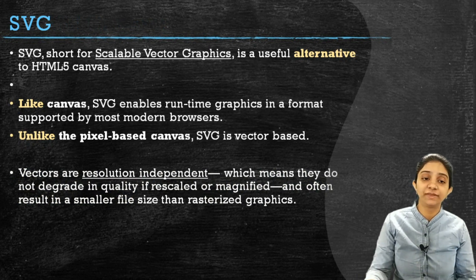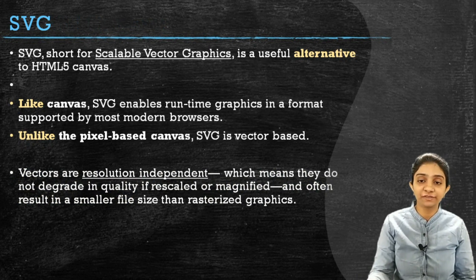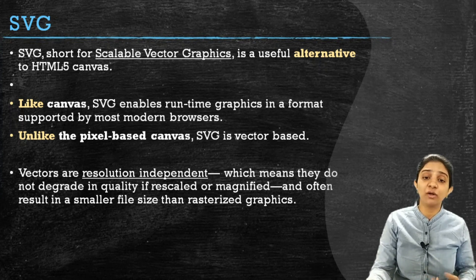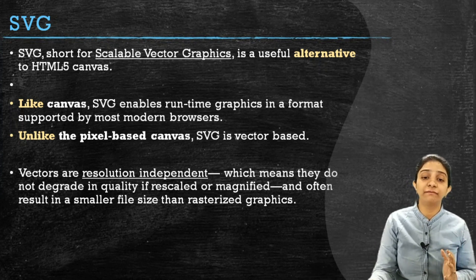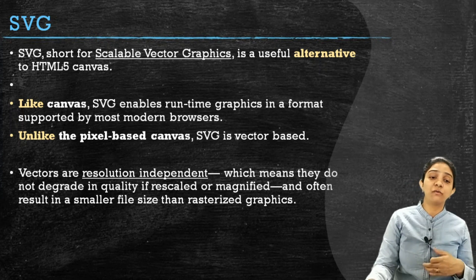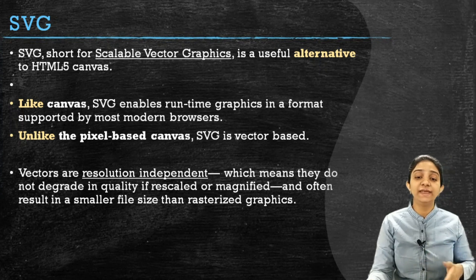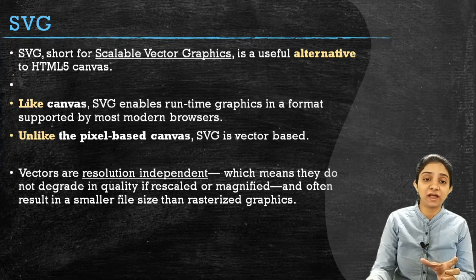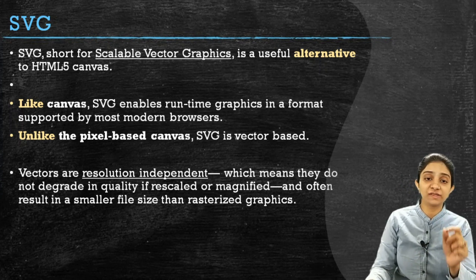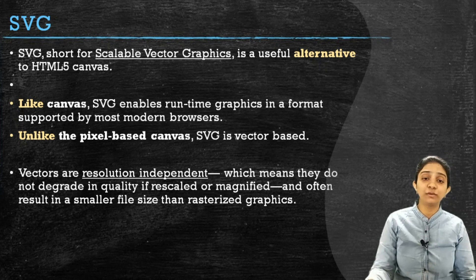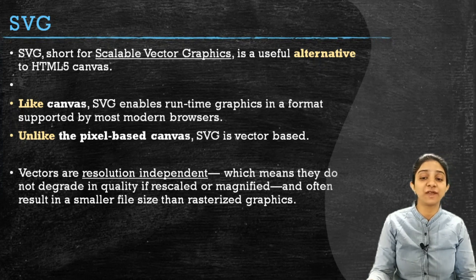Next is SVG. SVG stands for Scalable Vector Graphics and is an alternative to HTML5 canvas. Just like HTML5 canvas, SVG also enables runtime graphics in a format supported by most modern browsers. But unlike canvas, SVG is vector-based. Vectors are resolution-independent, meaning they do not degrade in quality when pre-scaled or magnified. So if you enlarge or zoom into a page, its size will scale independently without quality loss. Also, SVG files are comparatively small compared to pixel-based raster graphics.